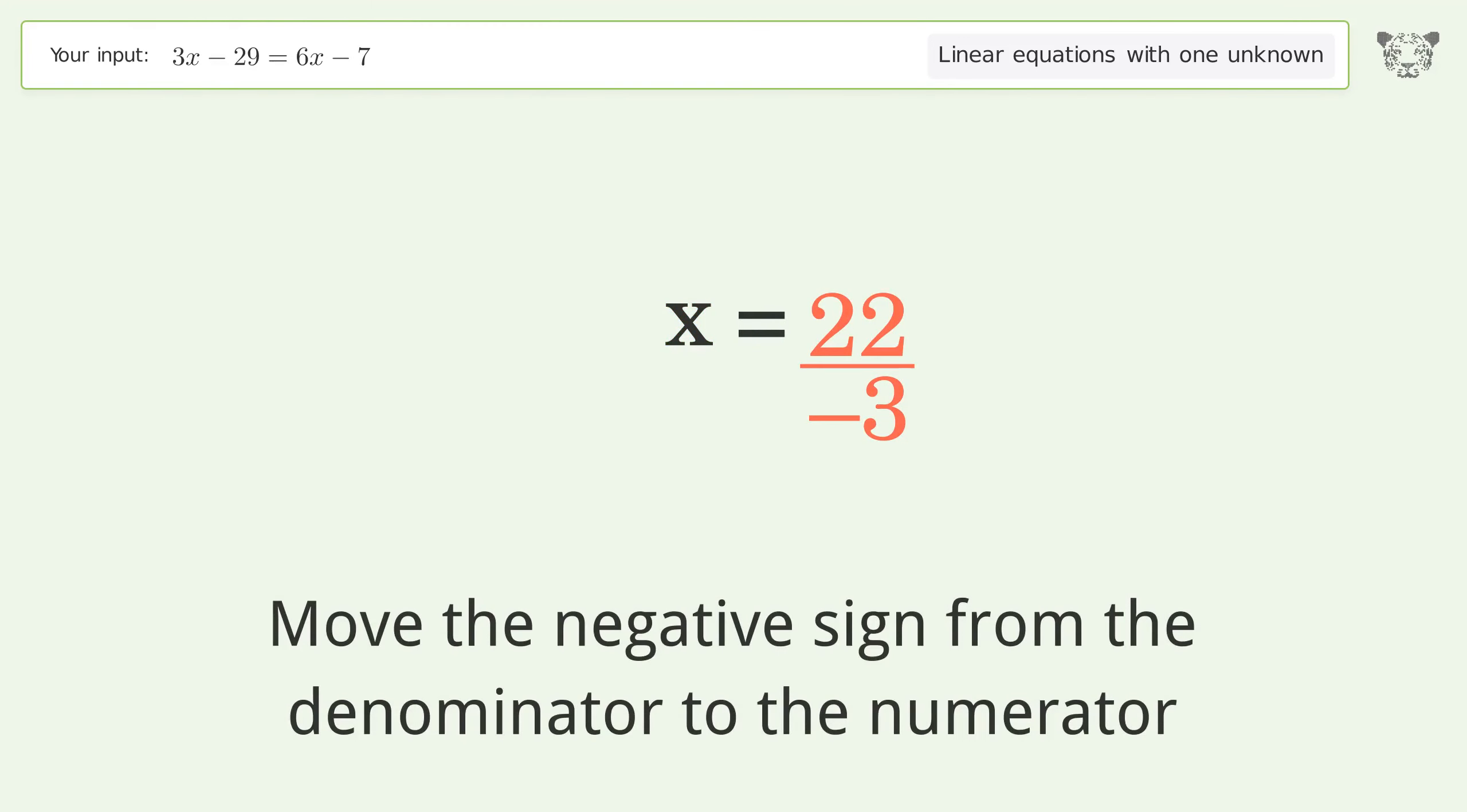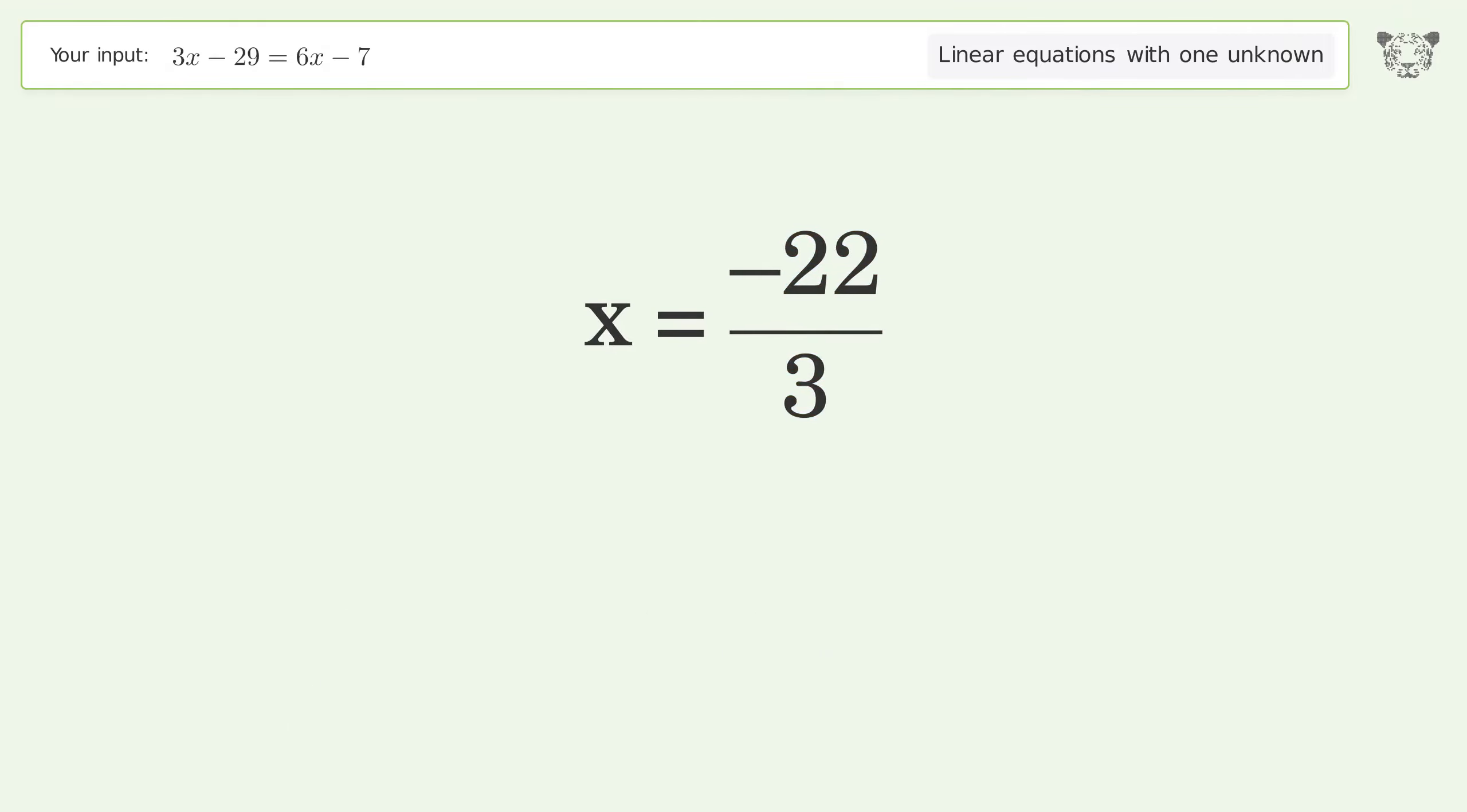Move the negative sign from the denominator to the numerator. And so the final result is x equals negative 22 over 3.